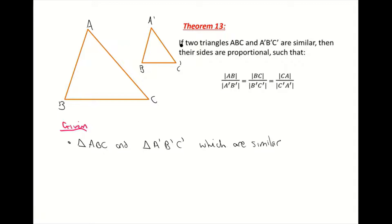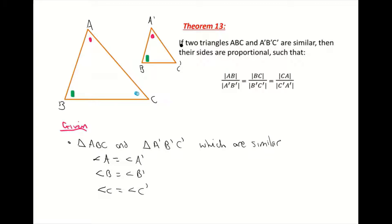Let's follow that up by stating the angles that are equal. Angle a is equal to angle a dash, angle b is equal to angle b dash, and angle c is equal to angle c dash. Those angles are equal because it is a similar triangle — the angles in a similar triangle must be equal. We can also mark those angles as equal on our diagram.